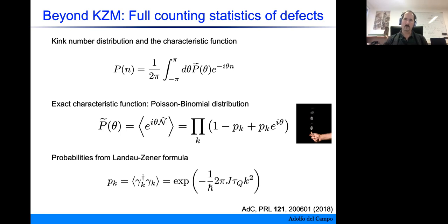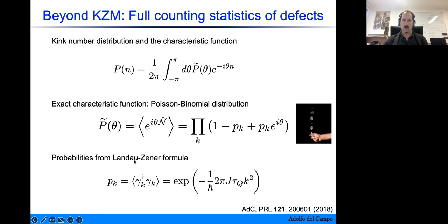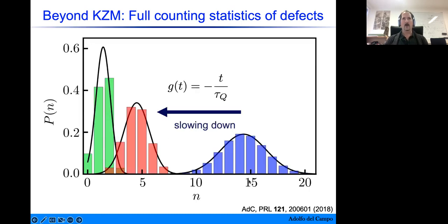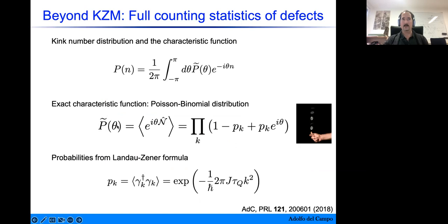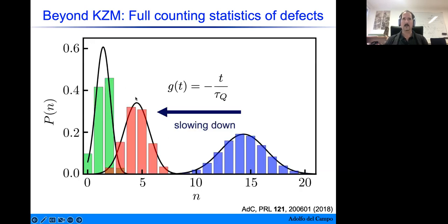Considering the one-dimensional Ising model on a ring with periodic boundary conditions, momentum is conserved and kinks appear in pairs with momenta k and −k. From the 2005 works we can estimate the probability for pair kink formation using the Landau-Zener formula, which tells us that it decreases exponentially with the quench time — so the slower we go, the lower the formation probability — and also decreases as a Gaussian with the wave number, so high-energy kinks are harder to create.